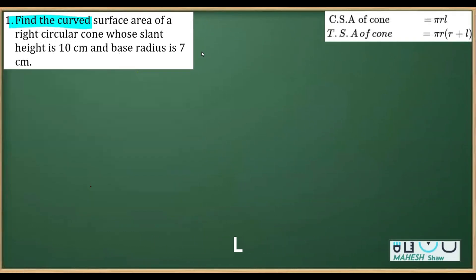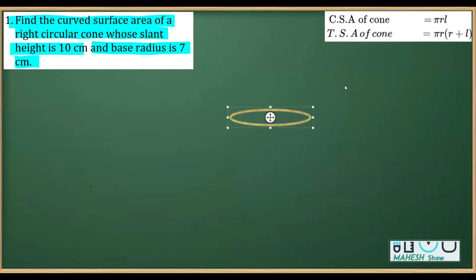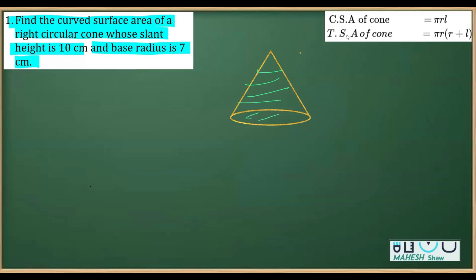In the first question, find the curved surface area of a right circular cone whose slant height is 10 centimeters and the radius of the base is 7. The curved surface area is only the outer curved part, excluding the base. The curved surface area formula is π r l.